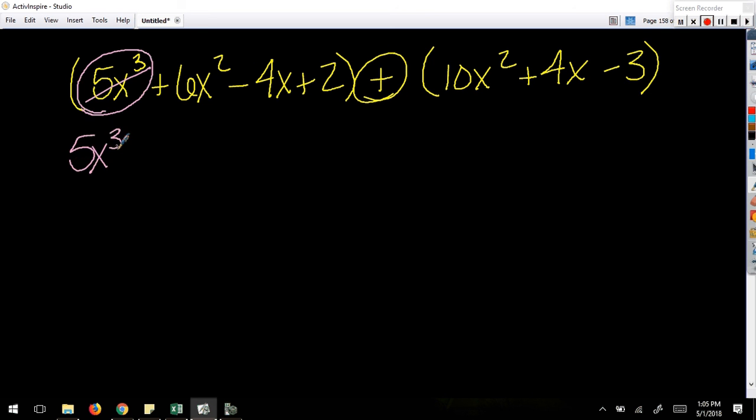So I'm going to write that on its own. 5x³. Now I'll move on to a power of 2. So I have a positive 6x² here and I have a 10x² here, so together I could add those and get positive 16x².